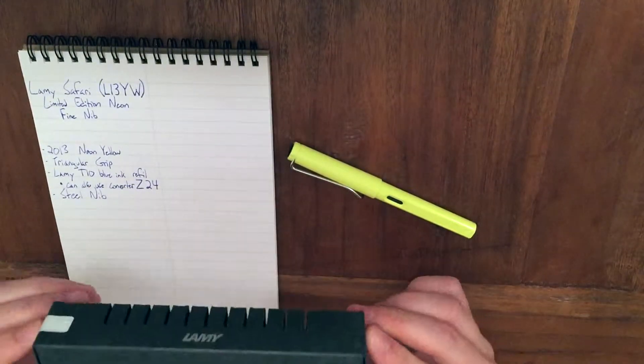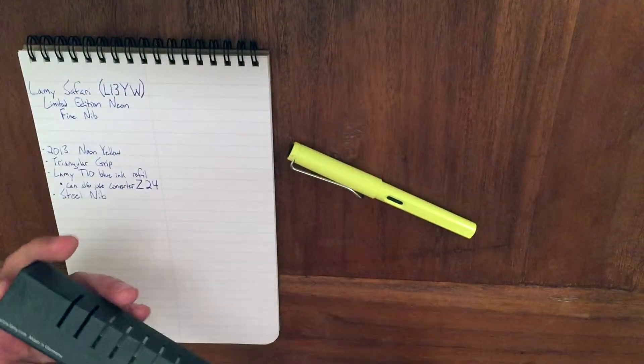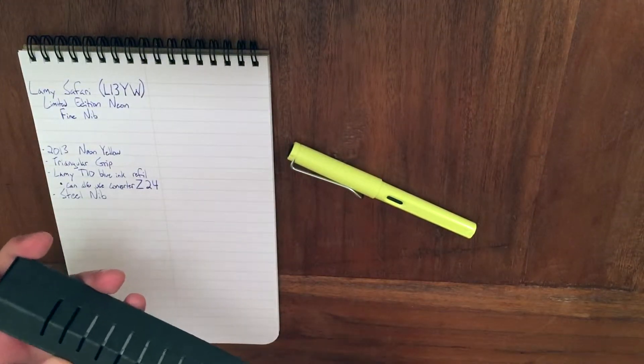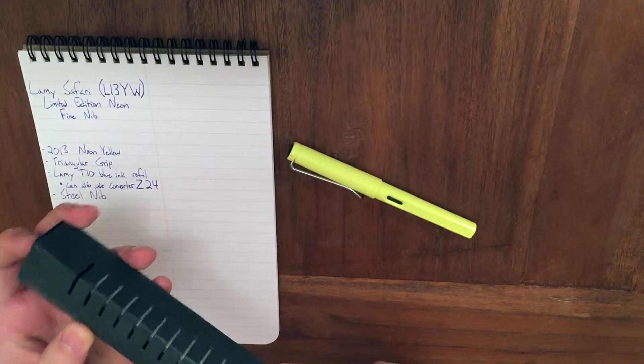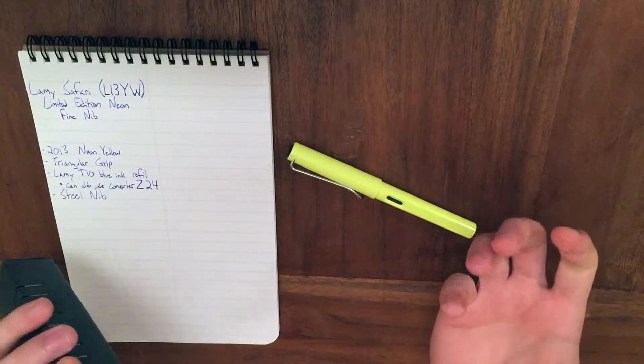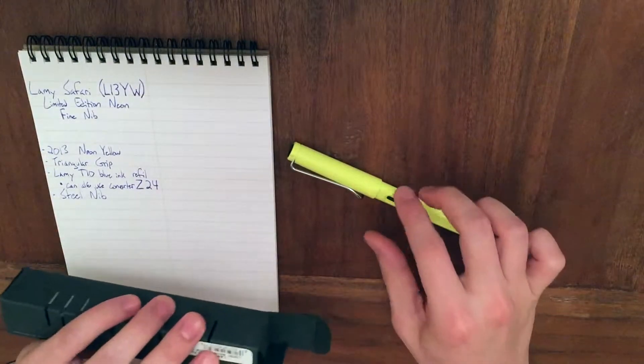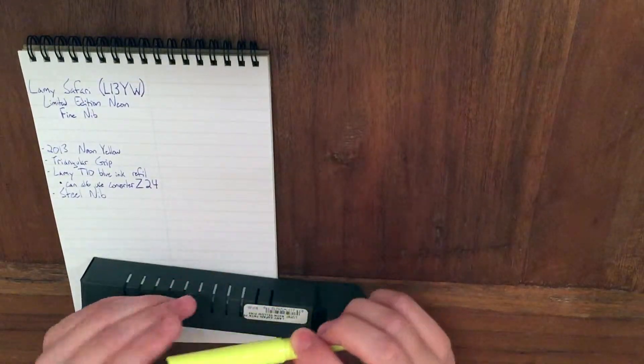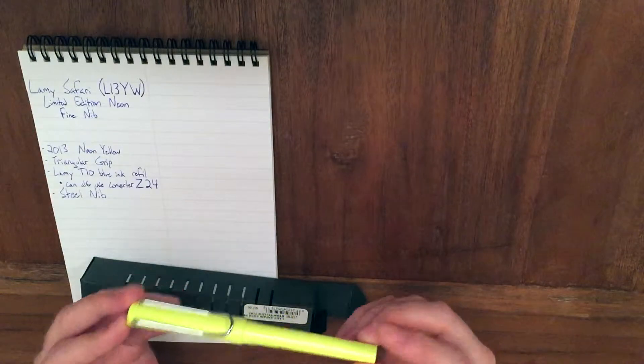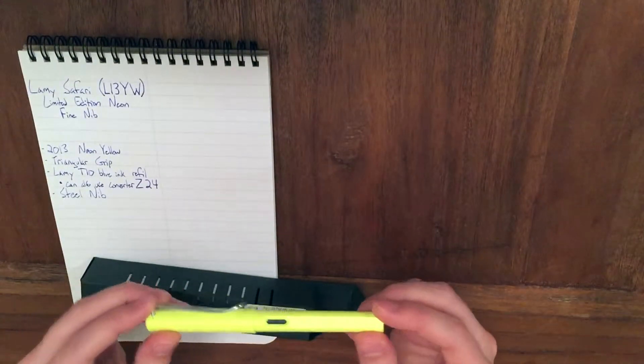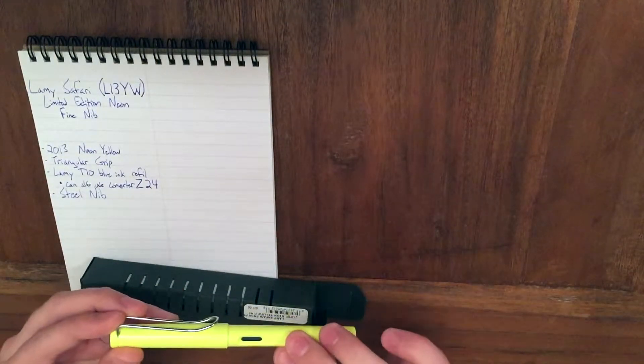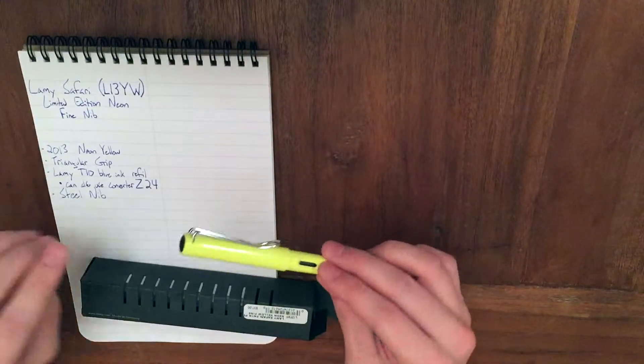So I did want to show you guys the packaging. I kept this on purpose just because I thought it was actually pretty neat for a pen of this caliber. I would say it's a pretty entry-level fountain pen between $20 and $30, and this is a special edition color. This is the limited edition neon yellow in a fine nib, and I believe it was the 2013 edition.